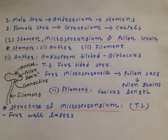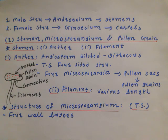Generally in angiosperm plants, the anther is a bilobed structure — dithecous. We can study it in transverse section (T.S.) of the anther, which shows a four-sided structure. During maturity, four microsporangia develop, and pollen sacs develop here. Within these pollen sacs, pollen grains develop, which are the main component for sexual reproduction.